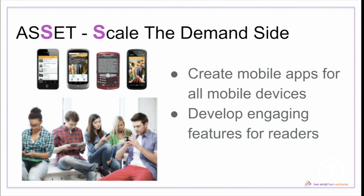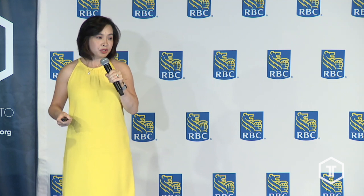Moving on to the second S in ASSET — that is to scale your demand side. Once you get the supply side taken care of, you really need to shift your focus to building your demand. Wattpad did that by building mobile apps for all mobile devices — starting with Java apps on feature phones, later releasing our iOS app and then our Android app. These mobile apps allowed our readers to read wherever and whenever they liked, and we also developed a suite of very engaging features. With more people reading on Wattpad, it attracted more writers to come and share their work — because that's where they could find the audience for their story.